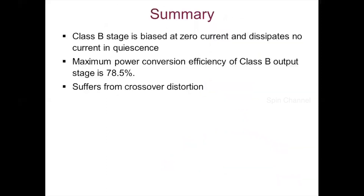To summarize, the Class B stage amplifier has a power conversion efficiency of 78.5%. Even though the efficiency is high, the circuit suffers from crossover distortion, causing the output to be completely distorted. Because of this, the Class B amplifier is not suitable for power applications.